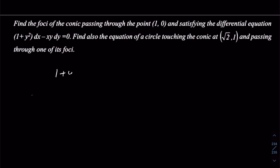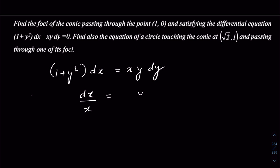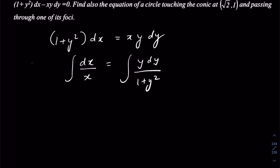Let's solve the first part: finding the conic satisfying this differential equation. This is a simple differential equation in variable separable form, so we'll separate x with dx and y terms with dy. It's easily variable separable, so let's integrate both sides.